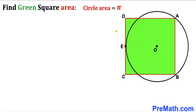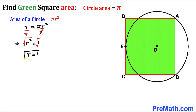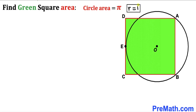Reverting to our problem, the area of the circle is π. Recalling the formula Area = πr², we substitute to get π = πr². Dividing both sides by π gives r² = 1, and taking the square root gives r = 1. So the radius of this circle is 1 unit.